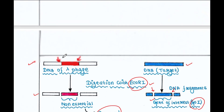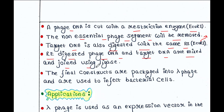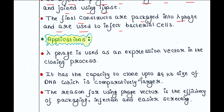To summarize the procedure: phage DNA is cut with the restriction enzyme EcoAD1 and the non-essential phage segment is removed. Target DNA is also digested with the same restriction enzyme. The restriction enzyme-digested phage DNA and target DNA are mixed and joined using ligase. The final constructs are packaged into lambda phage and used to infect bacterial cells.